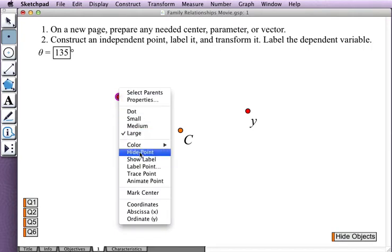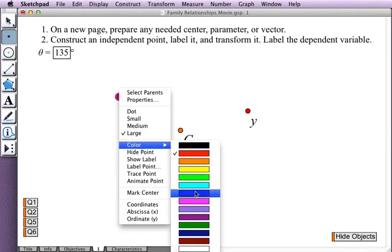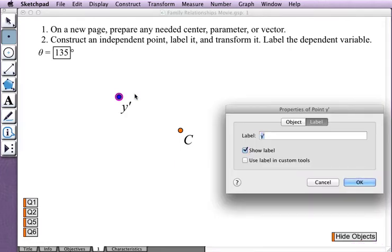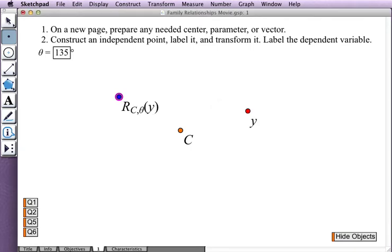And give the new dependent variable its own color. Let's make it blue and its own label using function notation. So that will be the rotation about center point C by angle theta of independent variable Y. So now we have proper function notation for our rotated variable.